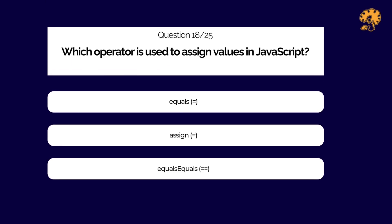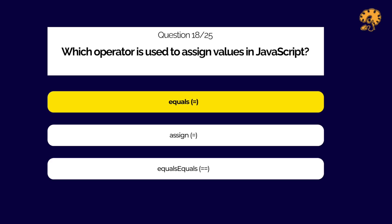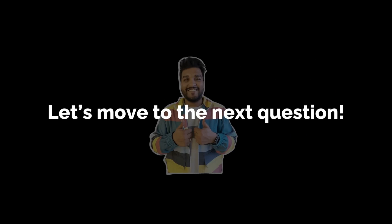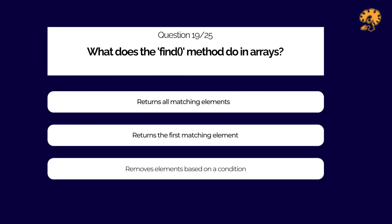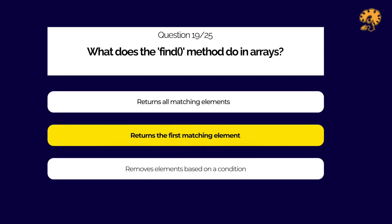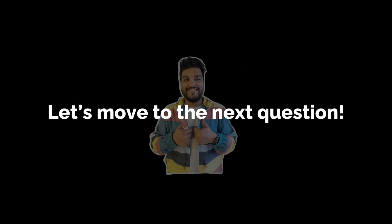Which operator is used to assign values in JavaScript? What does the find method do in arrays?